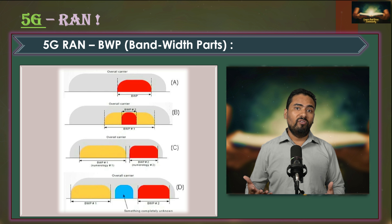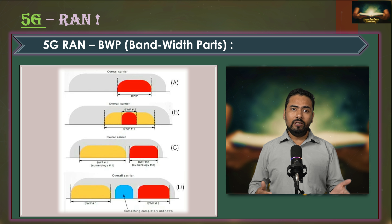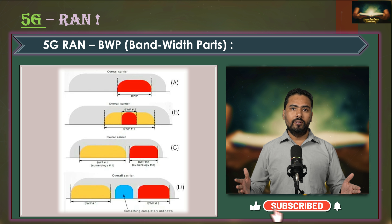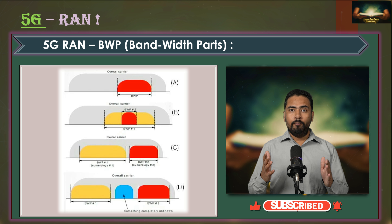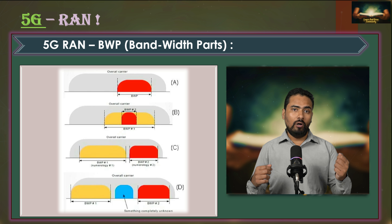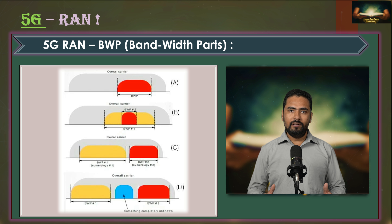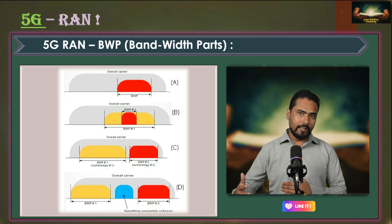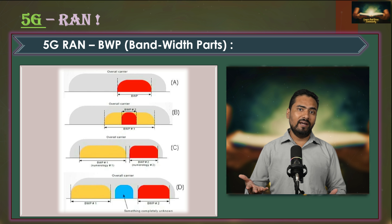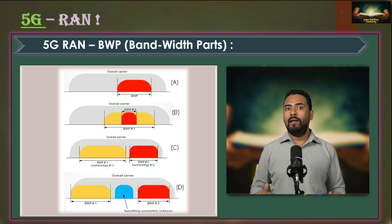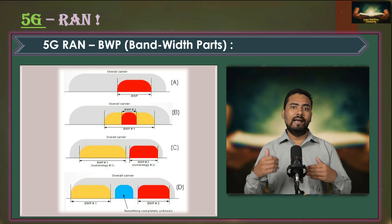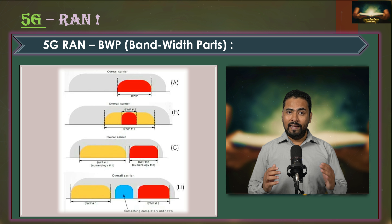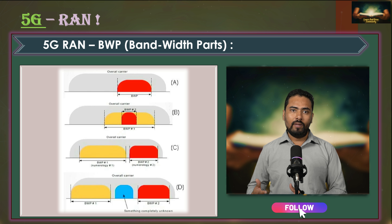There is also a lot of flexibility in how bandwidth parts can be set up on a carrier as seen in the figure. A UE can be configured with up to four bandwidth parts, but only one can be active at any specific point in time. When a smartphone has bursty data to send, the network configures that device for a wider bandwidth part, and when there is very little data, it configures the UE for a narrower bandwidth part, ensuring proper resource utilization and saving device battery life.